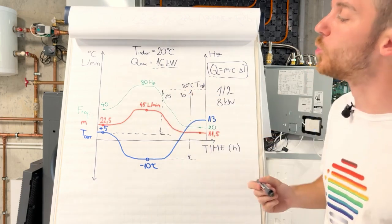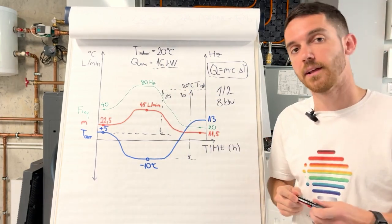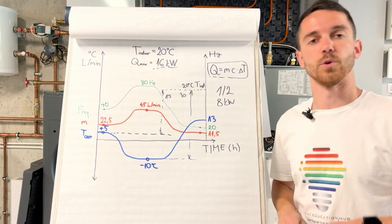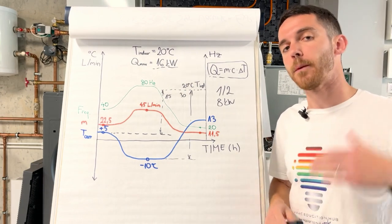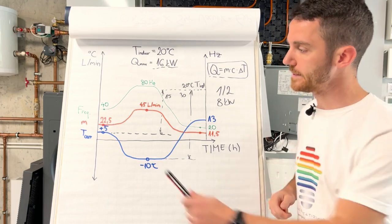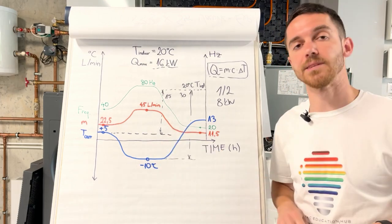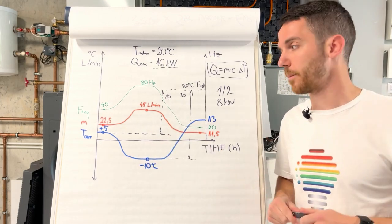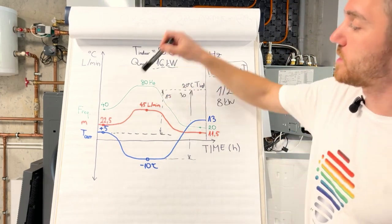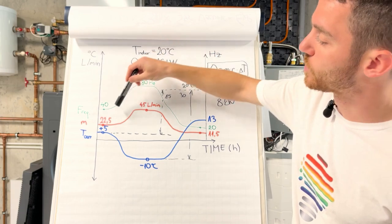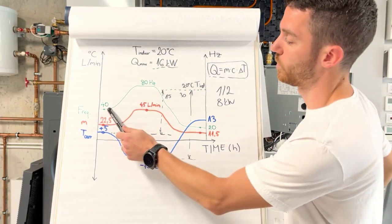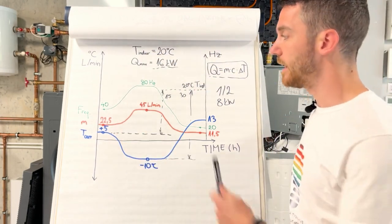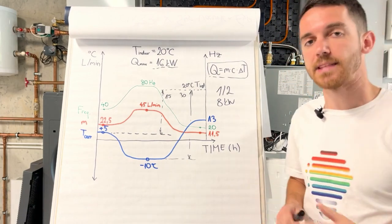We need 22.5 liters per minute, and at that flow rate, for sure you have enough pressure drop because this is lower than our maximum calculated capacity. Of course, in that case the compressor will also modulate. It will go, for example, on 40 hertz, and we will have stable condition.